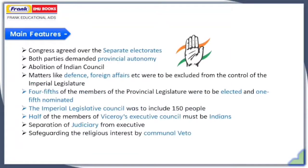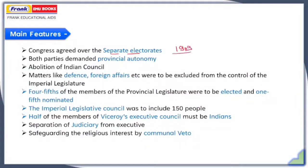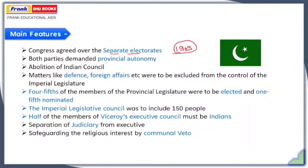Coming to the features of this Lucknow Pact: first of all, Congress agreed over the concept of separate electorate in this pact. Since the concept of separate electorate came into existence in 1909, Congress was continuously opposing it. In this Lucknow Pact, Muslim League succeeded in persuading Congress over the continuation of separate electorate.